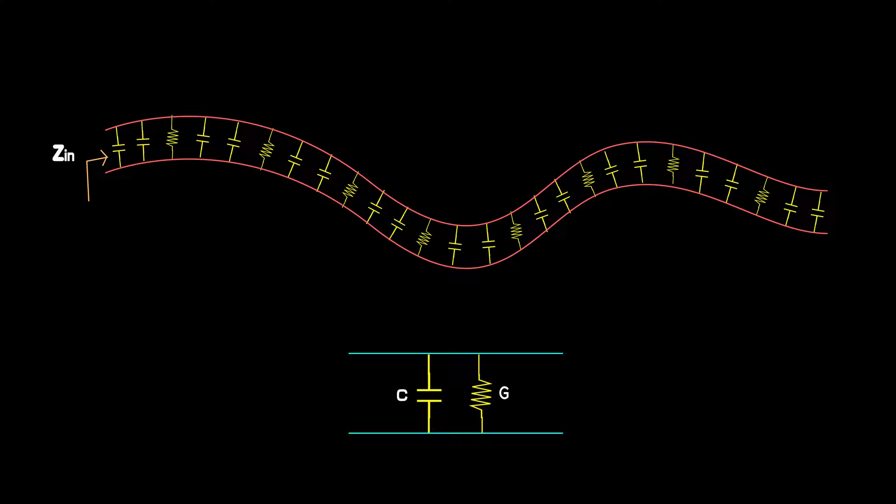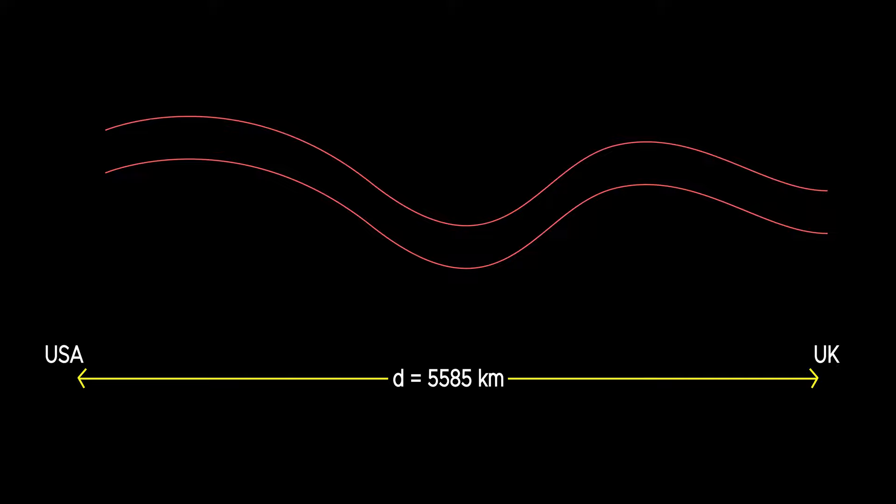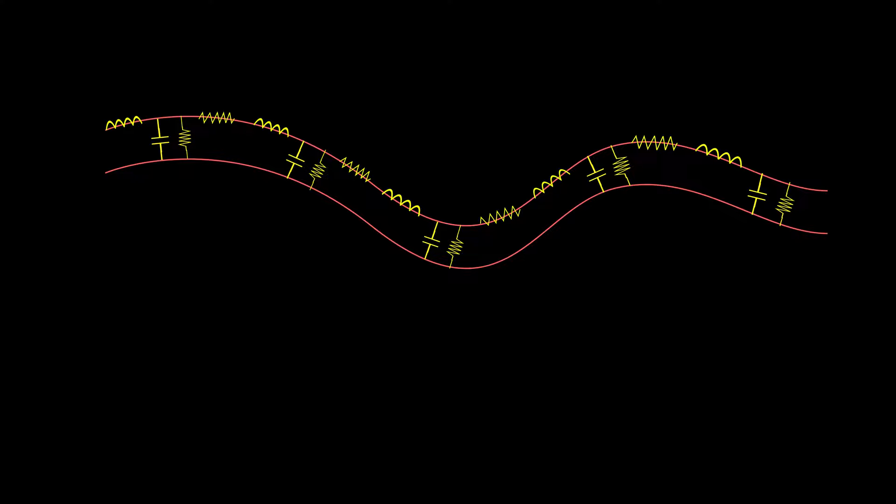Since the distance is too large, even at very low frequencies the signal wavelength would be too small compared to the wire and the delay would be significant. So how do signals propagate through this cable? Well, each transmission line is composed of series inductance and resistance and parallel capacitance and conductance.